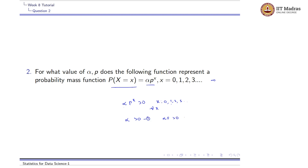From these two cases we can see that alpha should be greater than or equal to 0 and p should be greater than or equal to 0. Both of these conditions are required for it to satisfy the probability mass function.